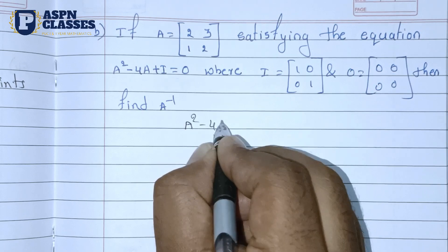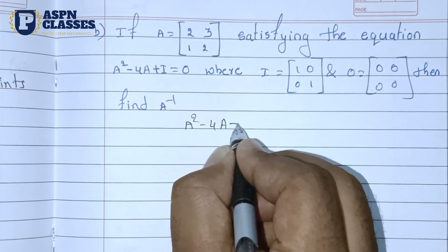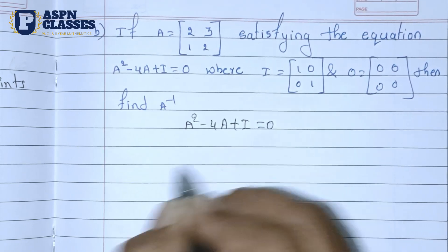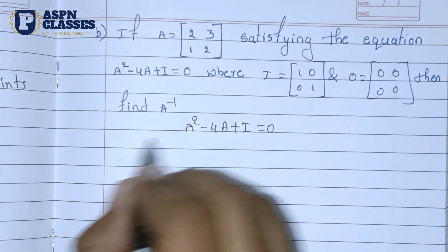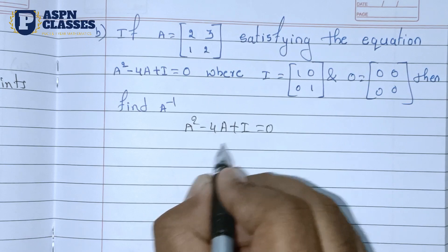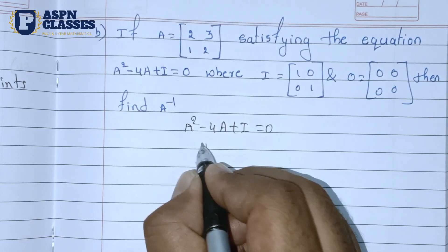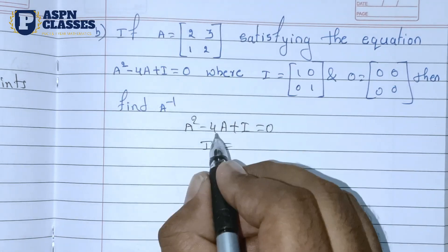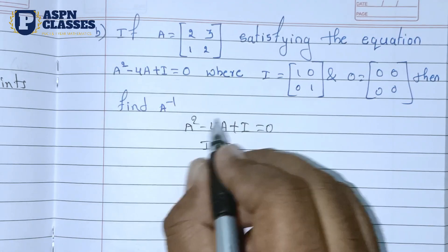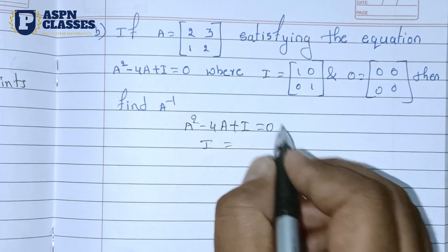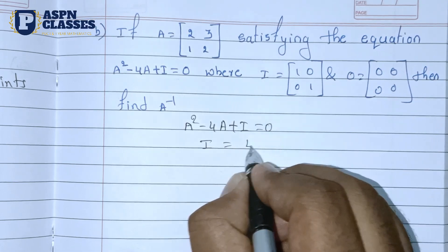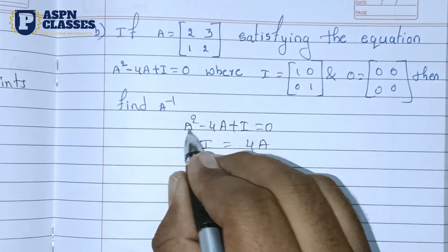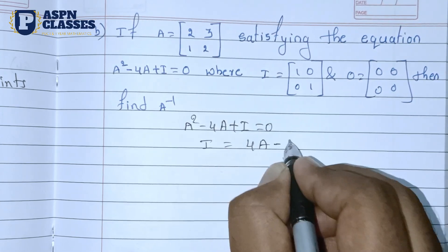The equation is A squared minus 4A equals 0. We use this to find A inverse.